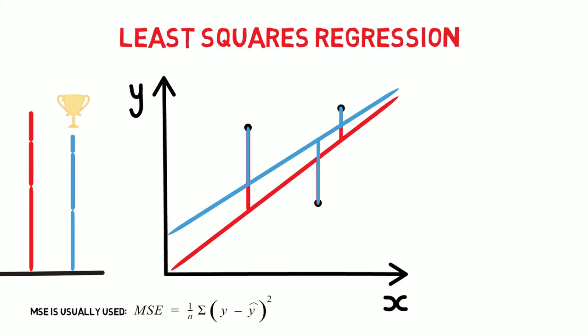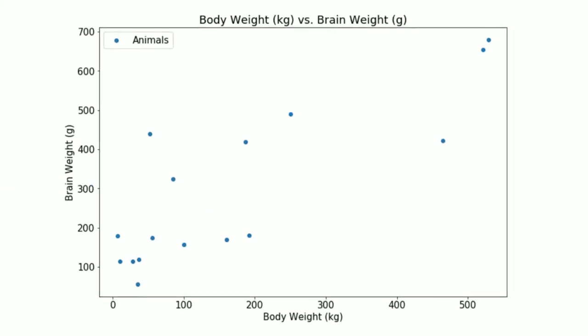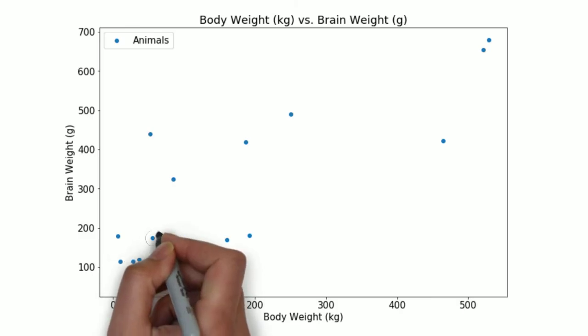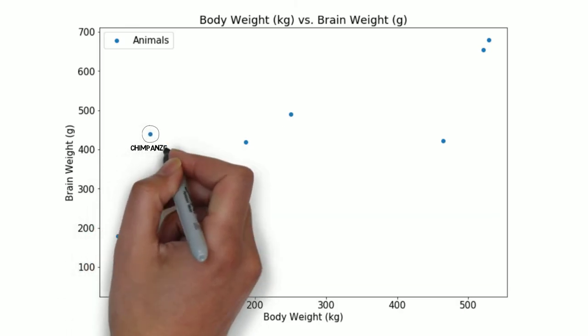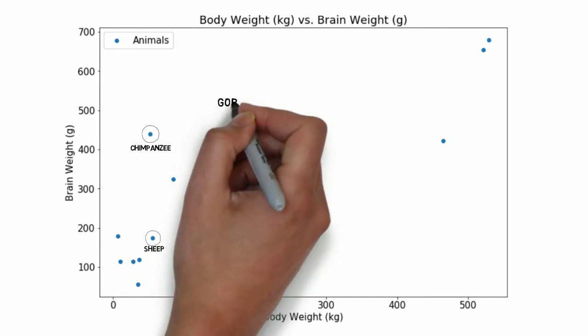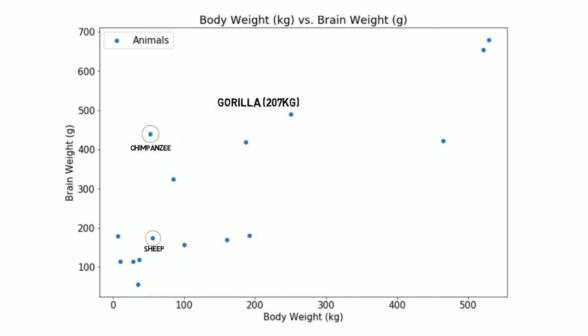Now let's take a look at a real-life data set about the relationship between average body weight in kilograms and average brain weight in grams for animals. The blue dots in this graph represent different animals. For example, this data point is a sheep and here is a chimpanzee. Our goal is to predict the brain weight of a gorilla when we are given only the body weight of 207 kilos.